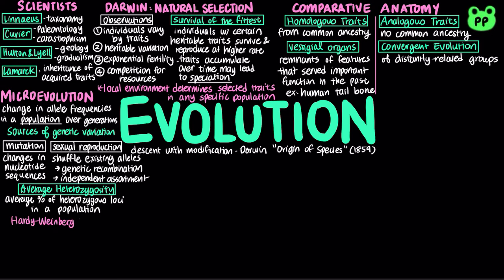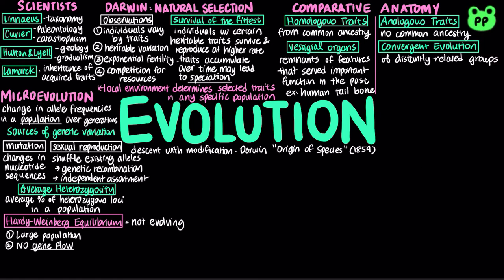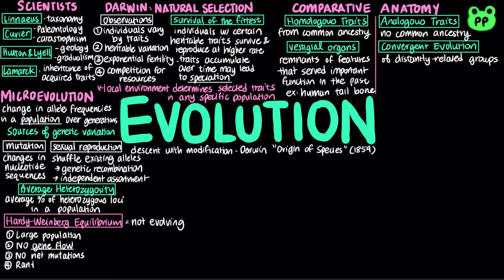The Hardy-Weinberg equilibrium describes an ideal population that is not evolving. The closer a population is to the criteria of Hardy-Weinberg principle, the more stable the population is likely to be. There are five conditions for Hardy-Weinberg equilibrium that are rarely met in nature: an extremely large population, no gene flow from other populations meaning immigration and emigration, no net mutations, random mating, and no natural selection.